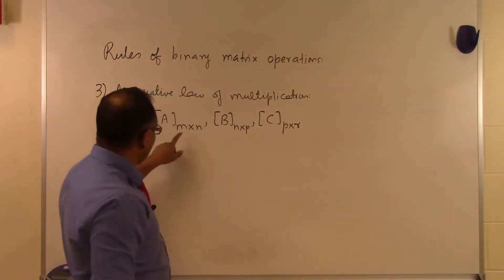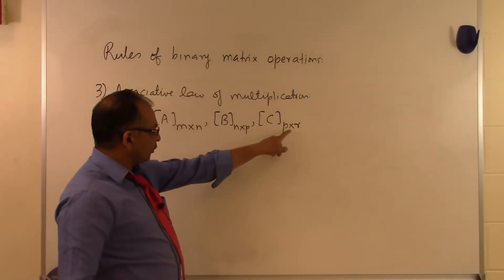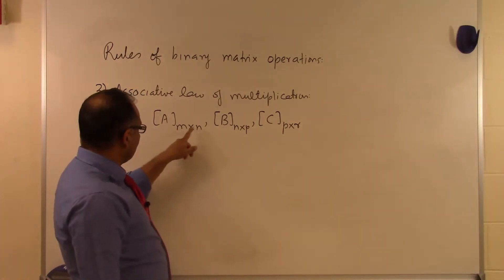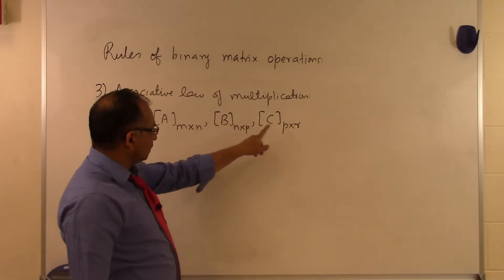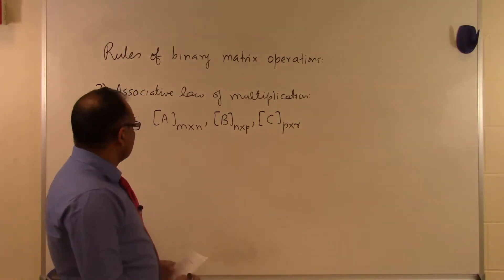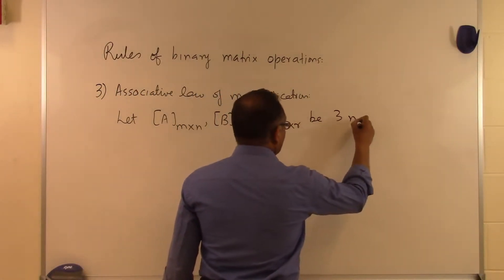So we got three matrices: M rows and N columns, N rows and P columns, and P rows and R columns. So the number of columns here are same as the number of rows here, and the number of columns here are same as the number of rows here. So these three matrices.